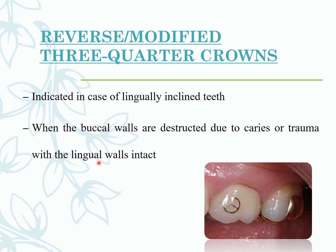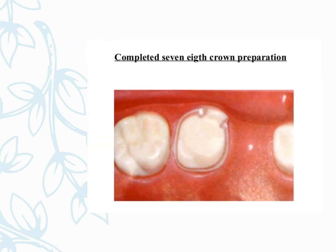The reverse modified three-quarter crown is indicated for lingually inclined teeth and when buccal walls are destructed due to caries or trauma while the lingual wall remains intact. The seven-eighth crown preparation involves only one portion of the tooth remaining intact.